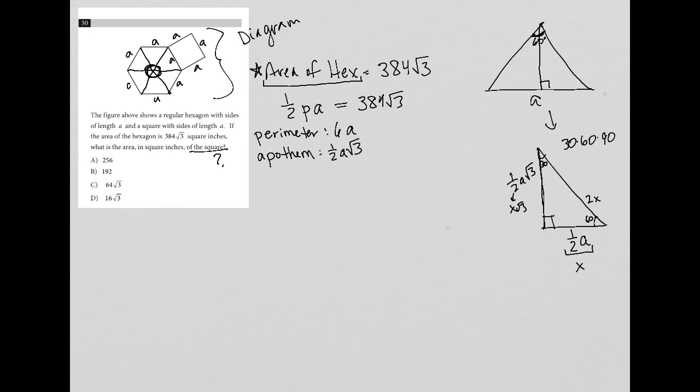So now I'm going to plug that in. So I know that the area of the hexagon is one half the perimeter, which is 6A, times the apothem, which is 1/2 A√3, is equal to, according to the question, 384√3.